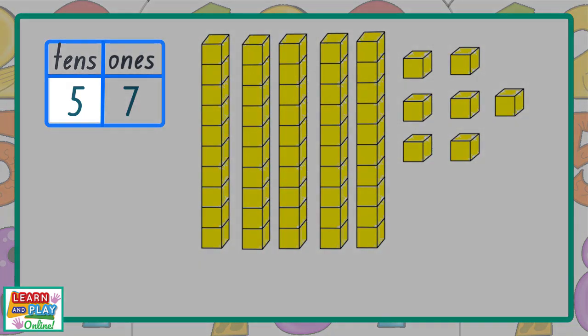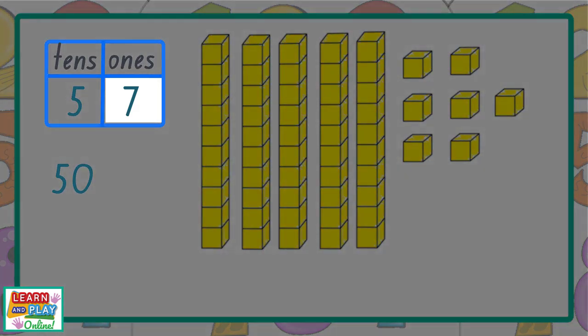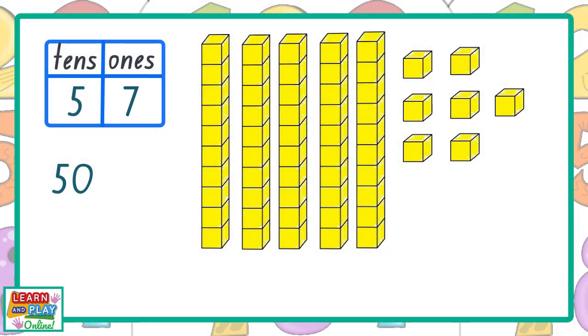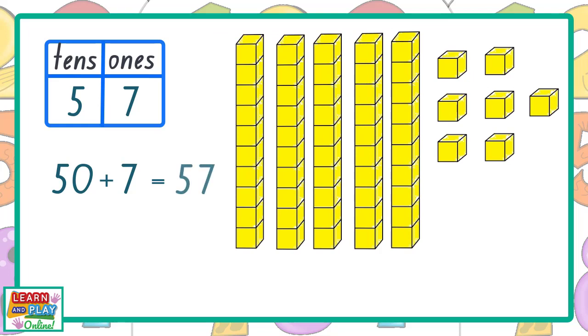Let's now look at the digit 5 in the number 57. Where has it been placed? It has been placed in the tens column, so that means it has a value of 50. Now let's look at the digit 7 in the number 57. Where has it been placed? It has been placed in the ones column, so that means it has a value of just 7. So when you add 50 and 7 together, you will have a total of 57.